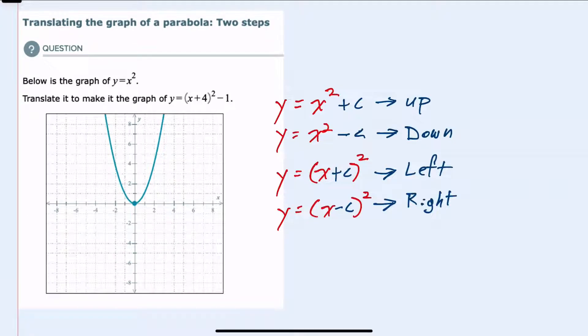To translate a parabola, we should recall that when we add a number to the end of the x squared, that would translate the parabola up that many units. When I subtract a number from the end of the x squared, that would shift it down.